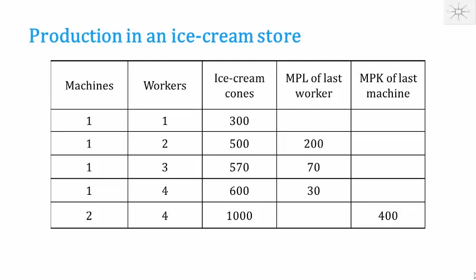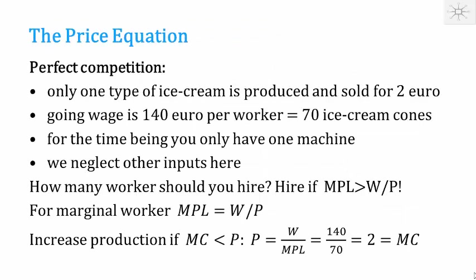It is profitable to hire workers as long as the marginal product is higher than the real wage. For the marginal worker — the one just worth hiring — the marginal product equals the real wage. You hire up to the point where the marginal product has fallen to the level of the real wage. That is the profit-maximization condition for the firm.